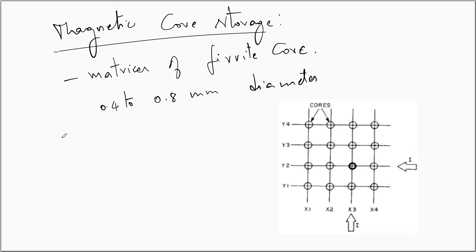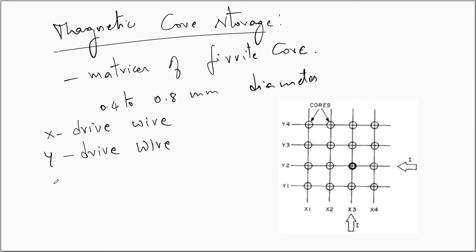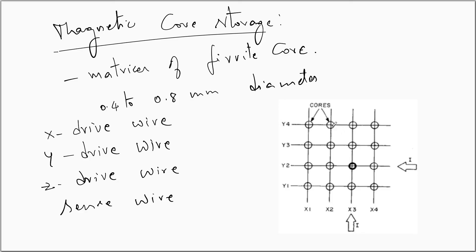In the case of magnetic core storage, four different wire configurations are possible: the X drive wire, the Y drive wire, the Z drive wire, and the sense wire. The current that flows through the circuit acts as a read-write head.